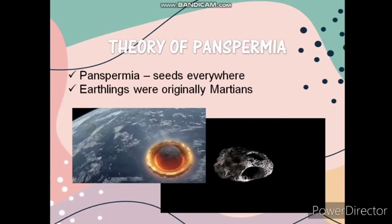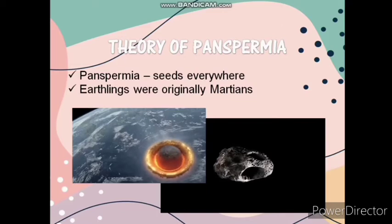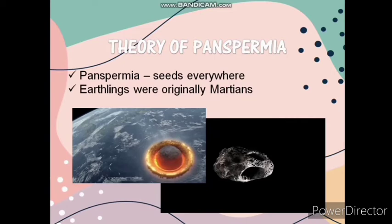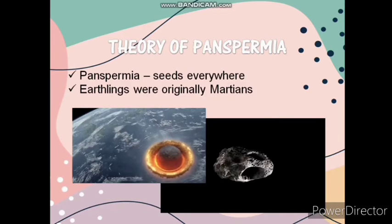The third theory is Panspermia, which came from a Greek word meaning 'seeds everywhere.' According to this theory, life exists throughout the universe, and life on Earth may have been transported from somewhere else in the universe. It could be from the collision of asteroids, which sent broken materials composed of organic compounds that serve as the building blocks of life. However, it does not really answer the question of the ultimate origin of life.